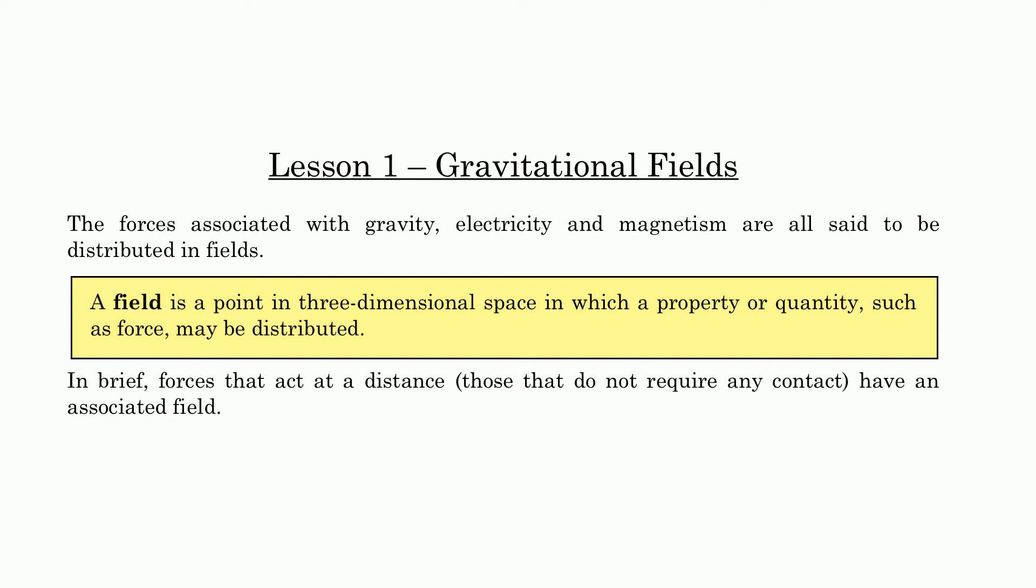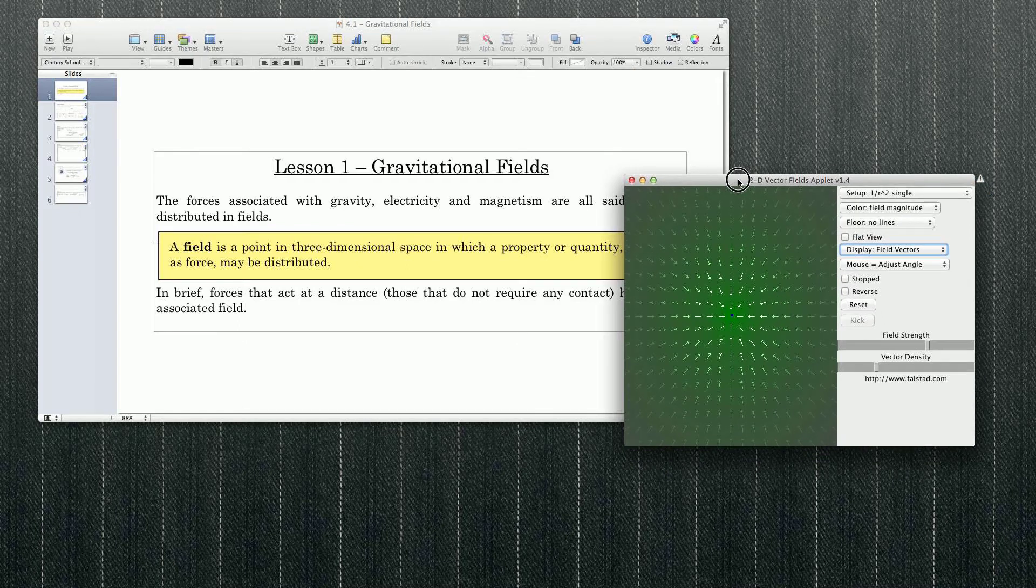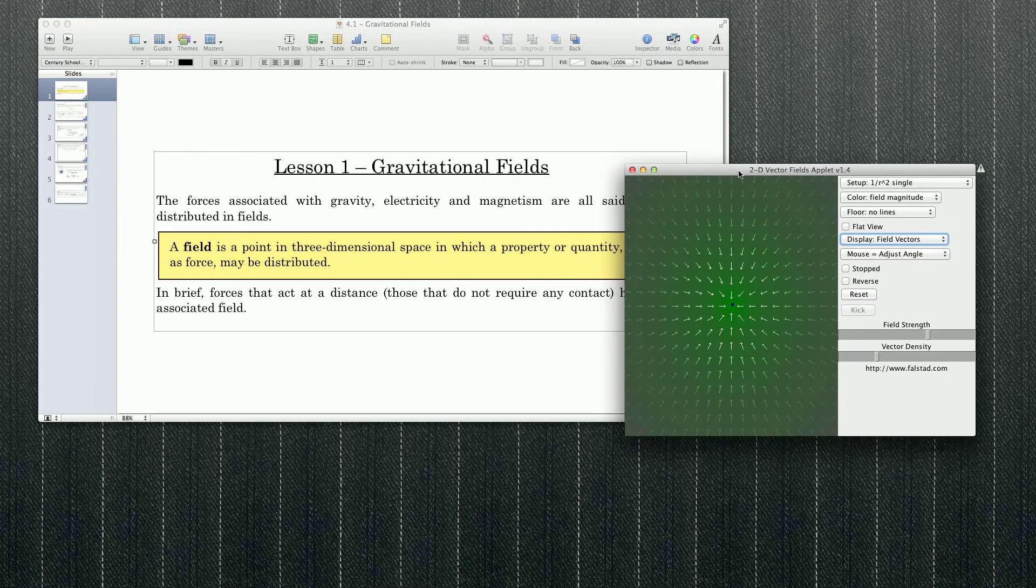has an associated field. And a field is basically a three-dimensional kind of distribution in space, where a quantity or a property like a force can be distributed. It basically tries to describe, in a vector way, what the force looks like everywhere.